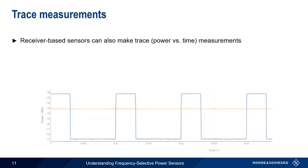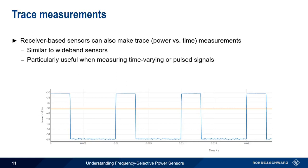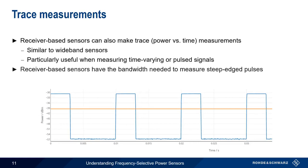Power versus time, or trace measurements, are also possible using receiver-based power sensors. This is similar to the functionality provided by wideband power sensors, and is useful when measuring time-varying or pulse signals. Because of their wide measurement bandwidth, receiver-based power sensors can measure very steep-edged pulses — that is, signals with very short rise and fall times.